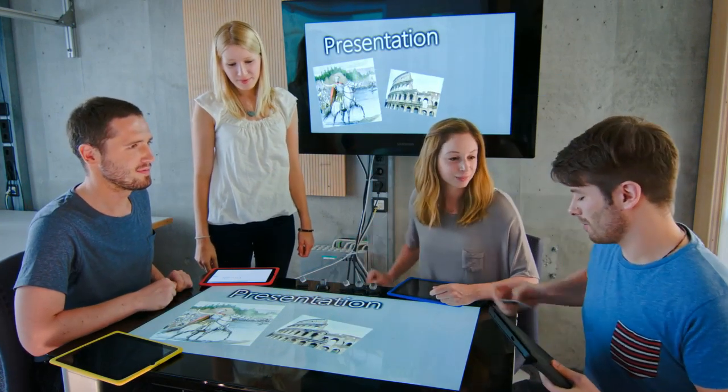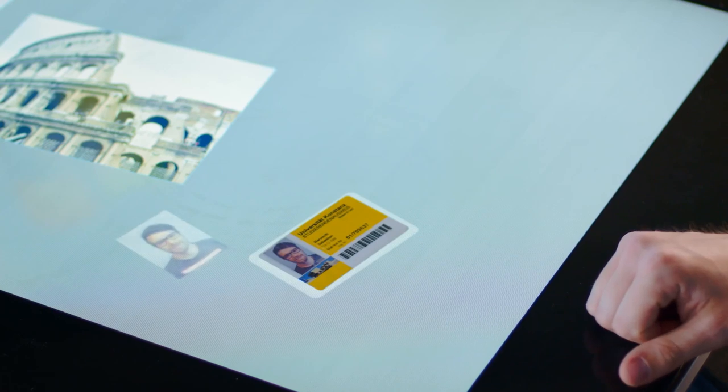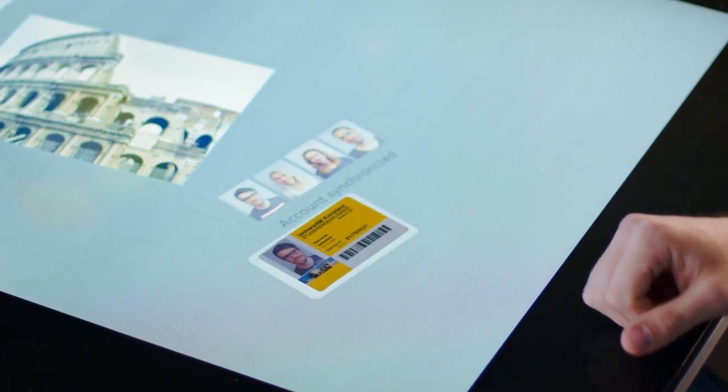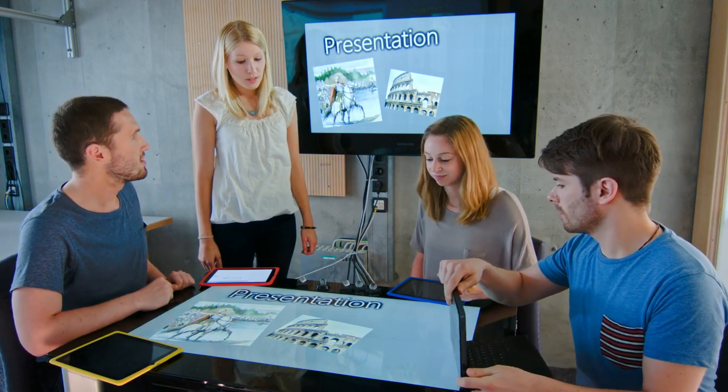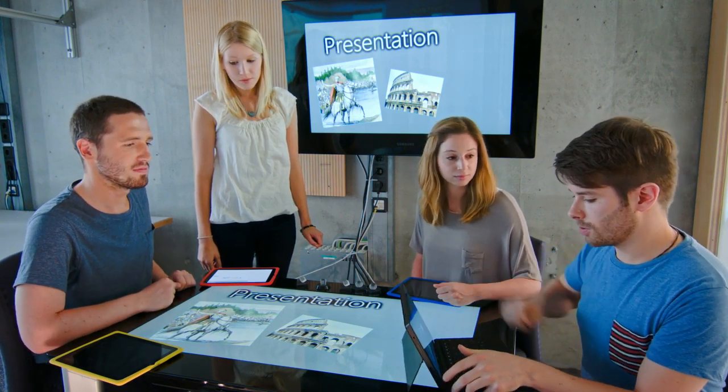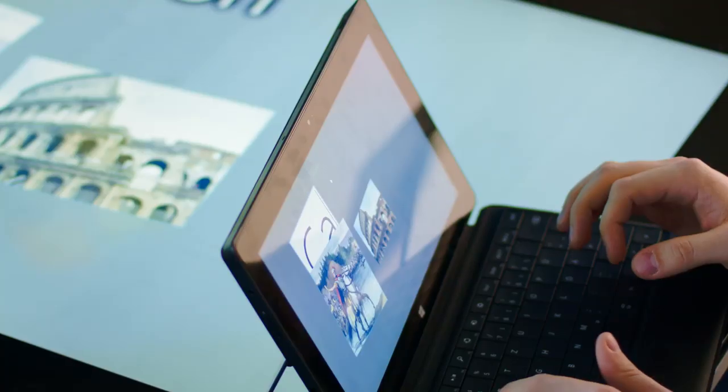Johannes joins the group by placing a student ID on the interactive table. Now registered, he can access the group's workspace on his tablet and is typing in the topic of their presentation about Caesar and the Rubicon.